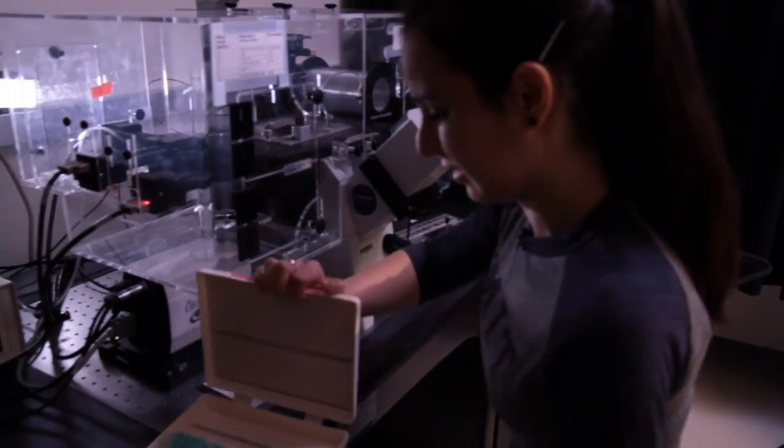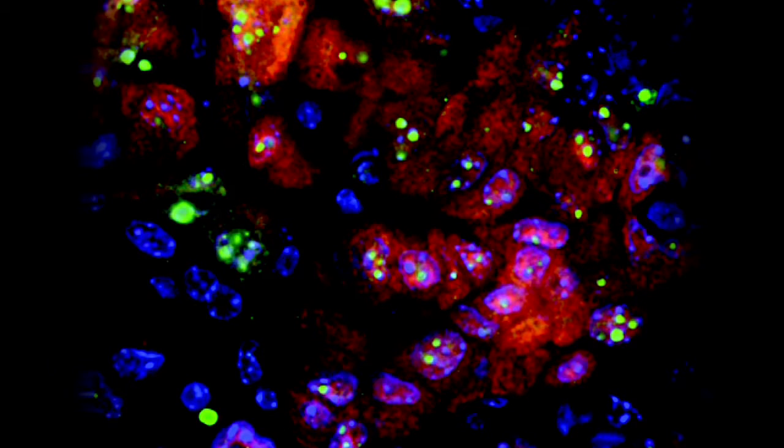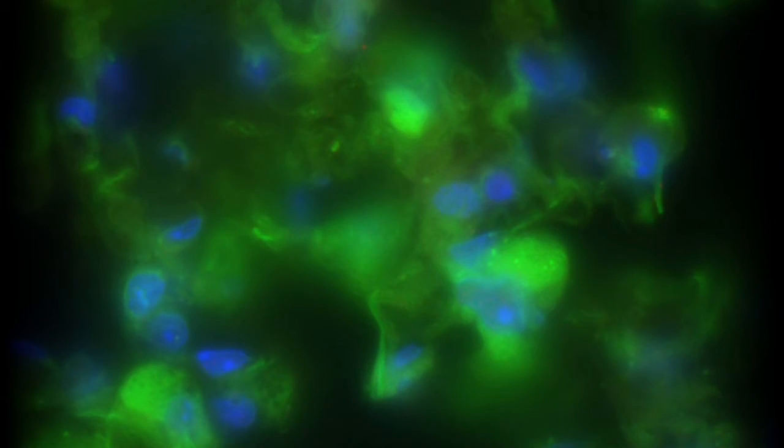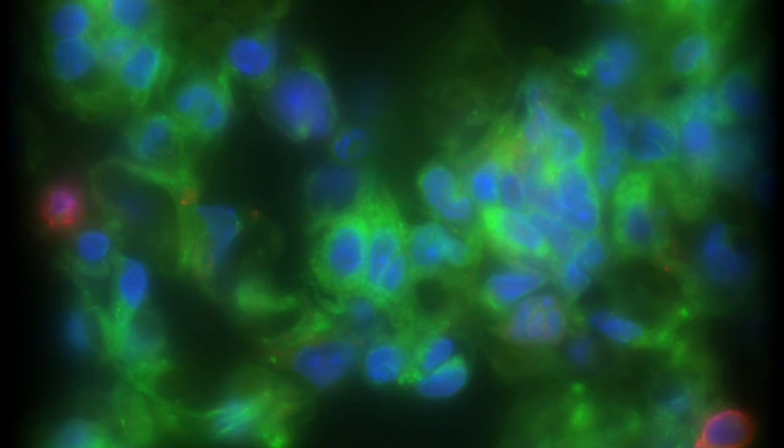By using microscopy, we can look at very thin slices of tissues. We stain for different pathways, different proteins that get expressed, look at different interactions between cell types, and look how the tumor progresses based on the morphology of the cells.